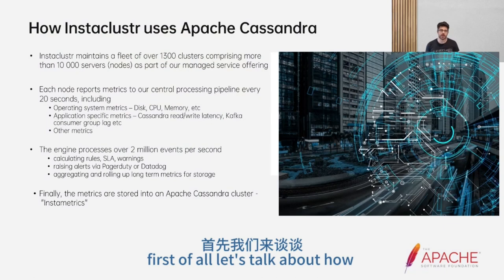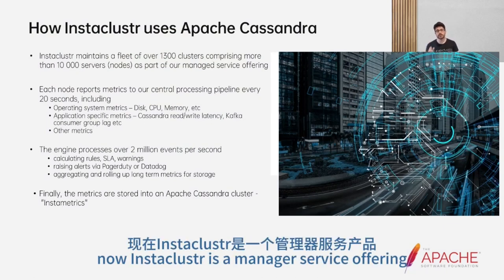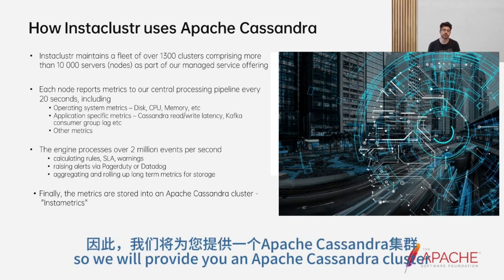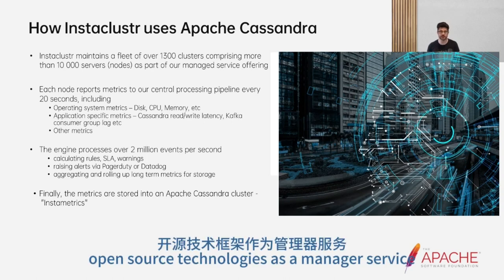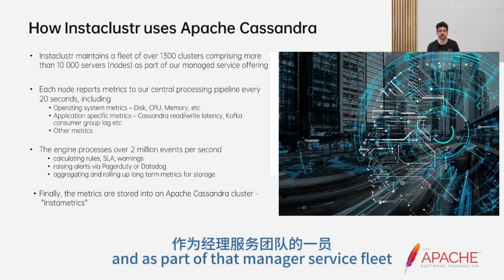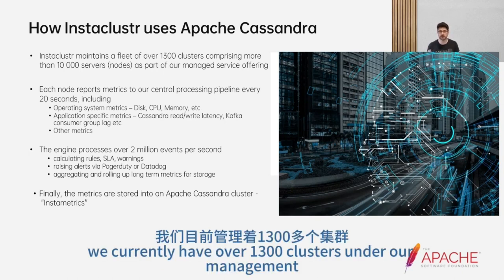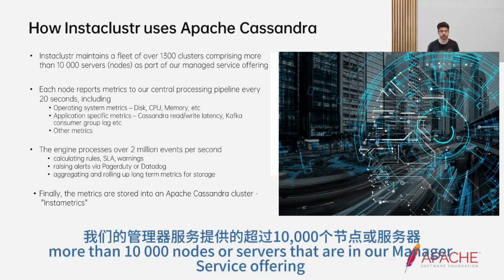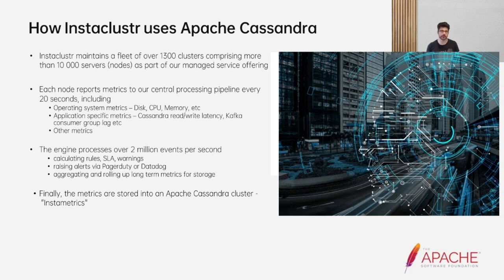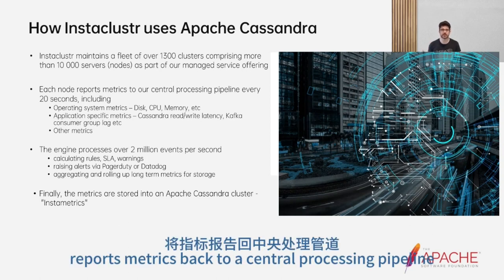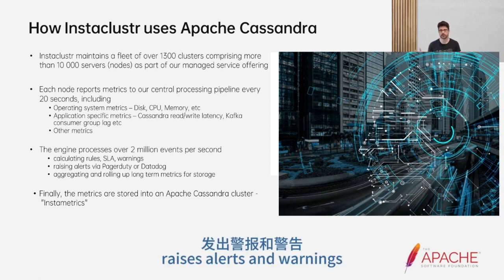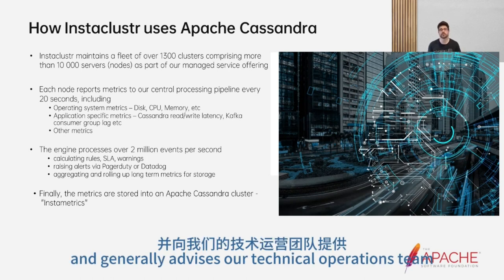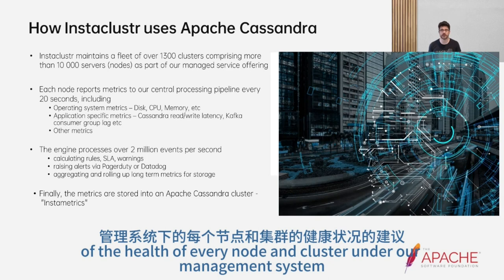Let's talk about how Instacluster uses Apache Cassandra. Instacluster is a managed service offering — we provide you an Apache Cassandra cluster, Apache Kafka cluster, and a number of other open source technologies as a managed service. As part of that managed service fleet, we currently have over 1,300 clusters under our management, comprising more than 10,000 nodes or servers. As part of that managed service offering, each of these nodes regularly reports metrics back to our central processing pipeline.